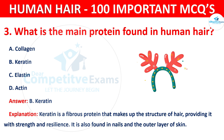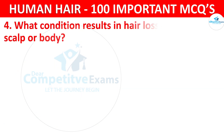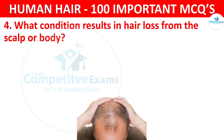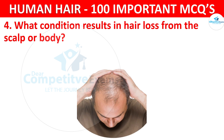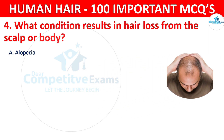Question number 4. What condition results in hair loss from the scalp or body? The options are alopecia, dermatitis, psoriasis, or vitiligo.